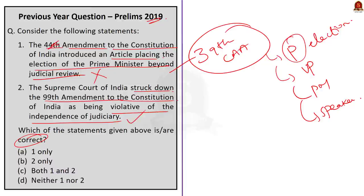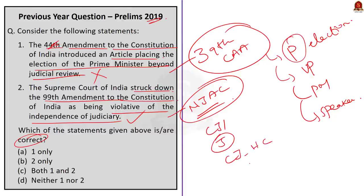Regarding Statement 2, it is correct. We have discussed this so many times in our daily news analysis. The 99th Constitutional Amendment Act 2014 provided for National Judicial Appointments Commission. The NJAC Act was enacted to regulate the procedure for recommending names for appointment as Chief Justice of India and other Judges. Later, on October 15th, a constitutional bench comprising five judges declared the NJAC Act unconstitutional on the plea that it would affect the independence of judiciary. Statement 2 is correct. Since Statement 2 is correct and 1 is wrong, our final answer will be Option B, 2 only.